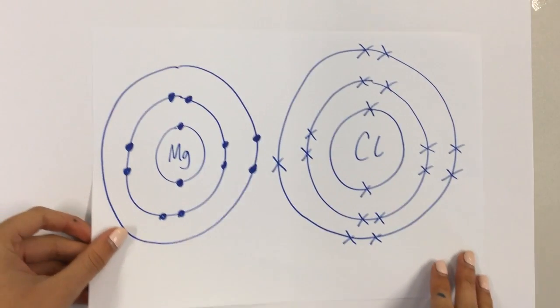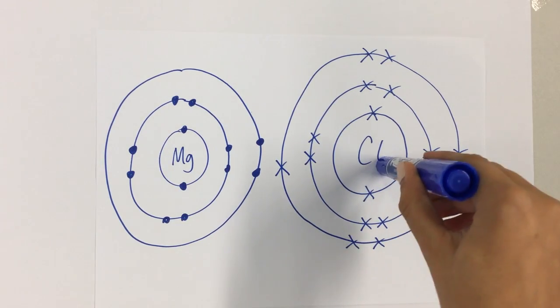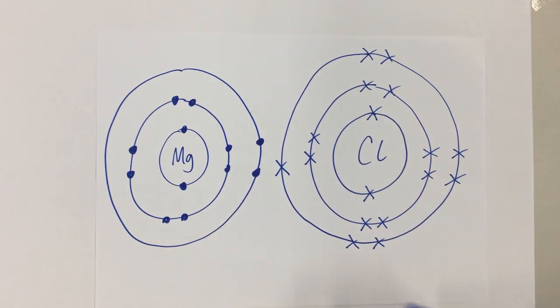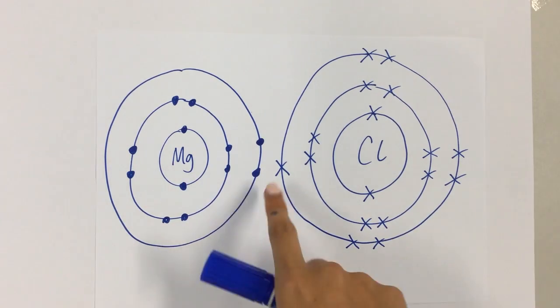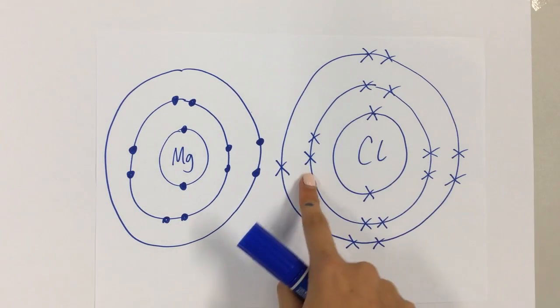Let's try a more tricky example. Here, what we've got is magnesium bonding with chlorine. They form a compound called magnesium chloride. What you can see here is that magnesium's got two electrons in its outer shell and chlorine has got seven in its outer shell.